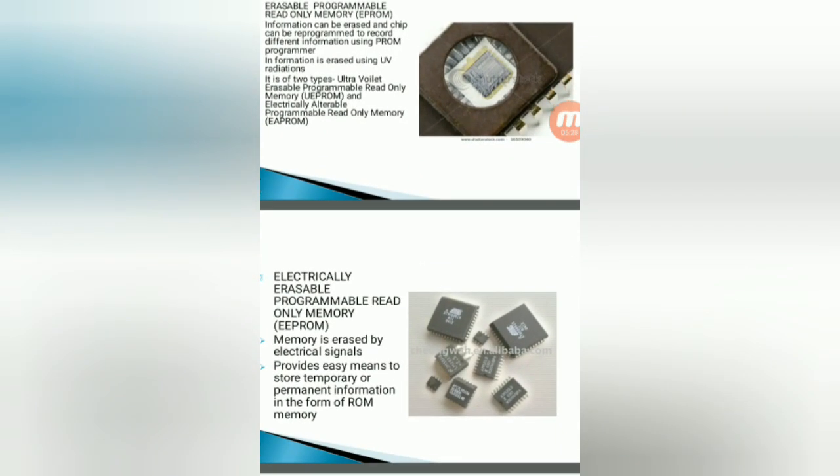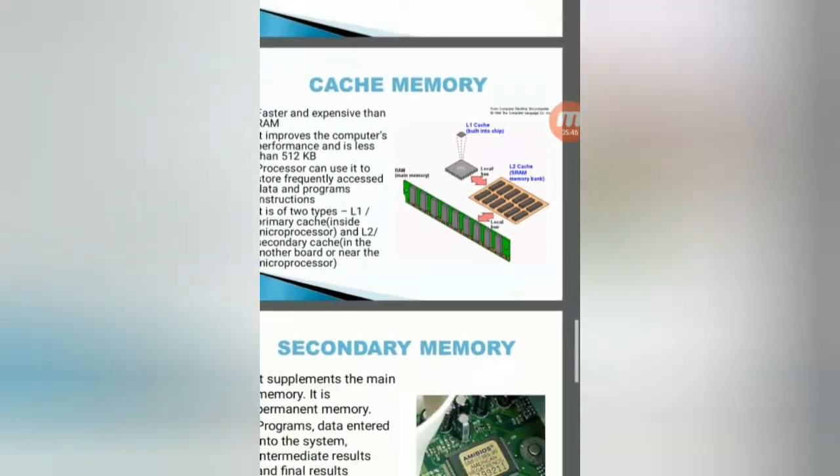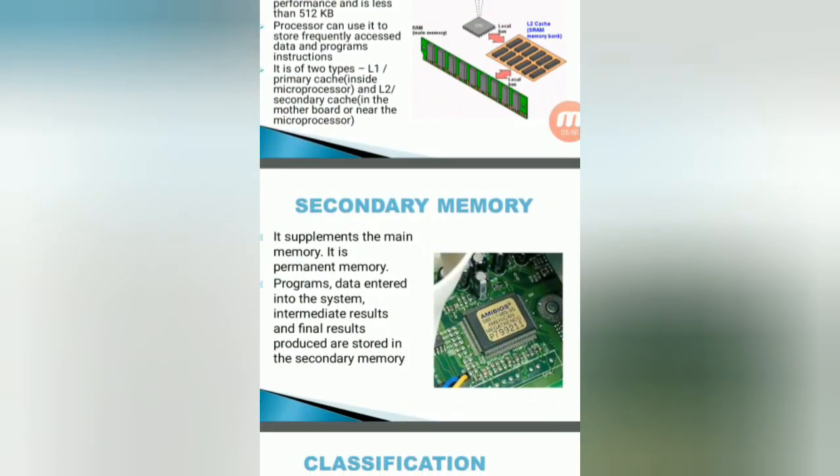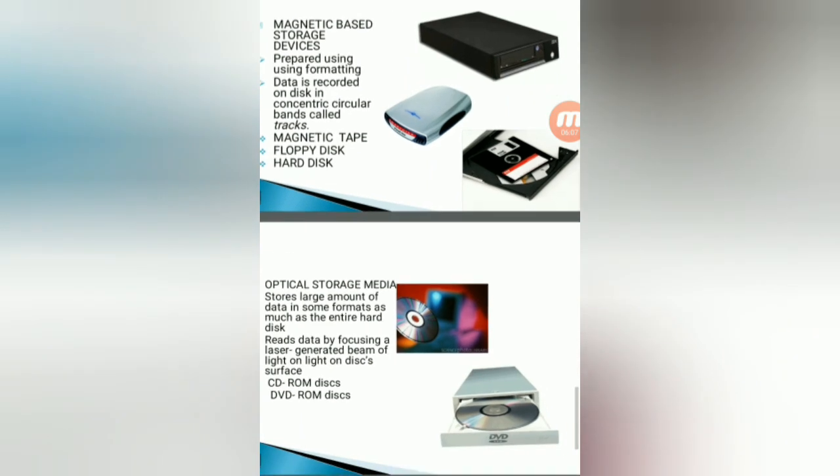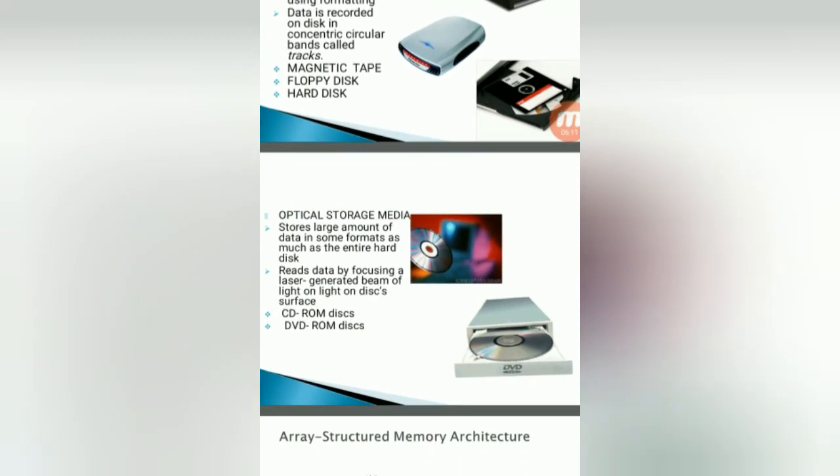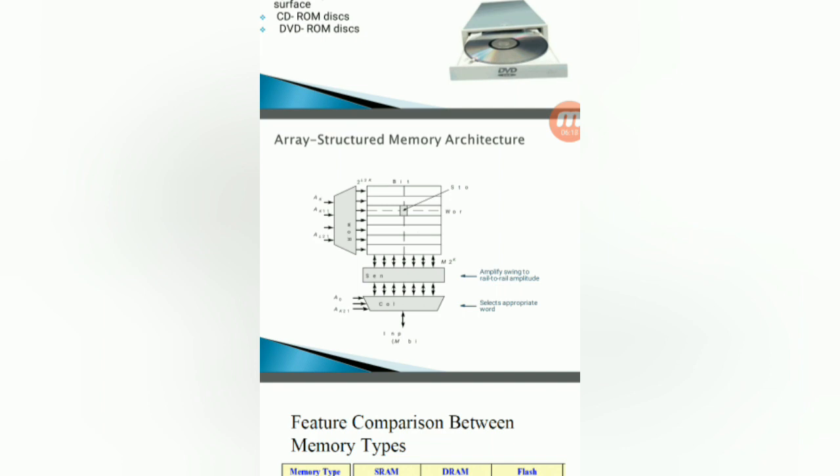So in case of electrically erasable programmable read-only memory, memory is erased by electrical signals. Next, cache memory is in between main memory and the secondary memory. By using this we can speed up the processor. Secondary memory is used for a permanent storage purpose. It supplements the main memory. It is permanent memory for programs as well as data. Classification of secondary memory: magnetic tape-based storage device, magnetic type floppy disk, hard disk, optical storage media like CD and DVD ROMs. These are the different types of secondary memories used.